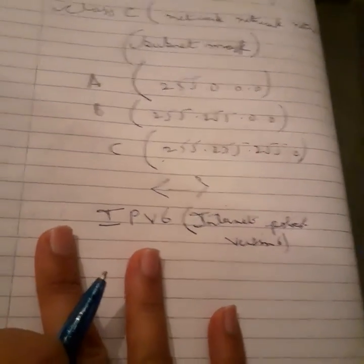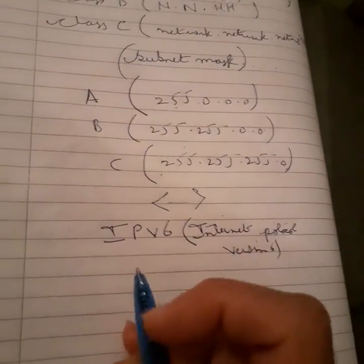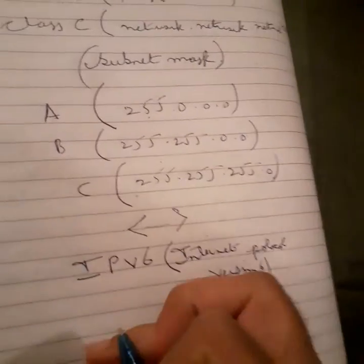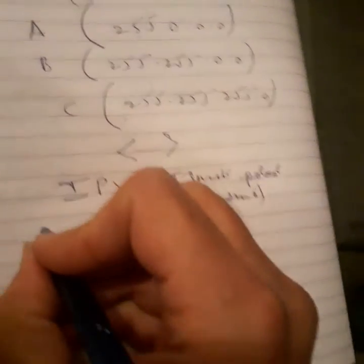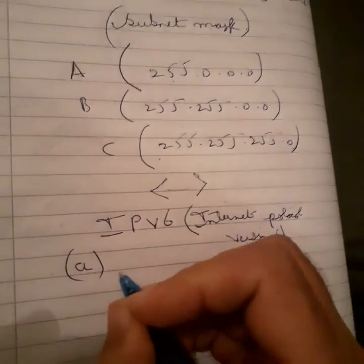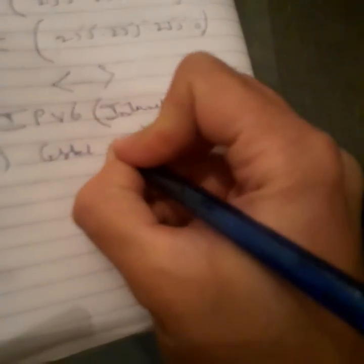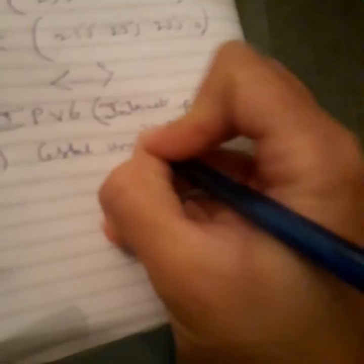But in IPv6, everyone be happy because we got some serious addresses. So, let's start with them. We have global Unicast address. Global Unicast.